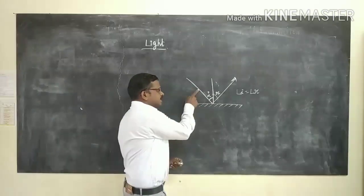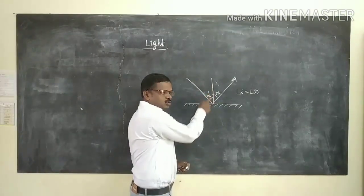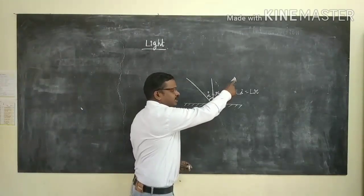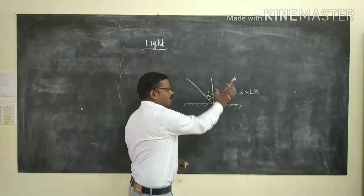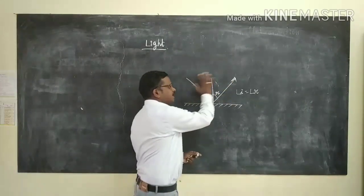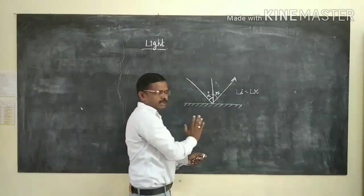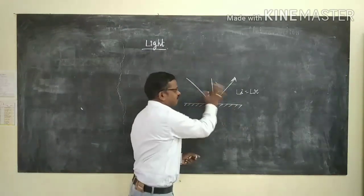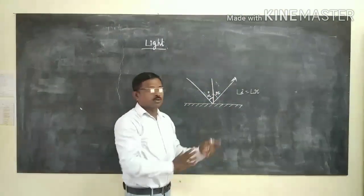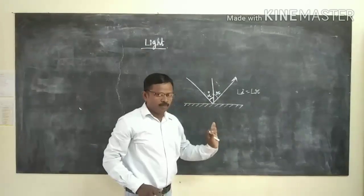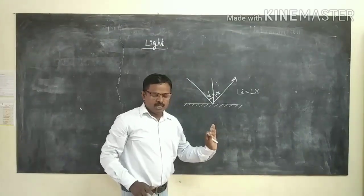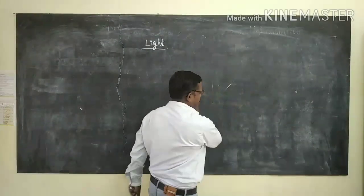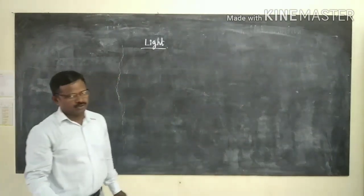The incident ray, the normal line to the point of incidence, and the reflected ray are all in the same plane — that means the same surface or same flat. This is the second law. So under reflection, light obeys two laws.